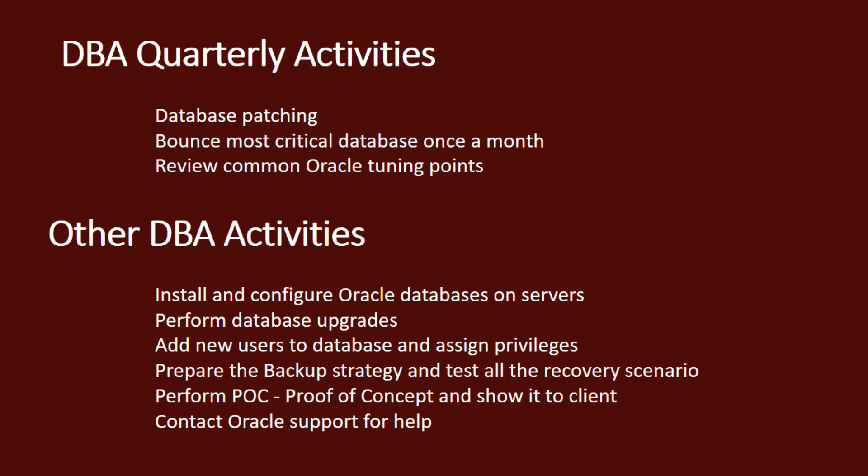Quarterly DBA activities include database patching if there are any upgrades. Upgrades are not very common every quarter, but database patching definitely happens quarterly. Bouncing critical databases — though whether this is monthly or quarterly is not mandatory; there are databases that have been running for years. Another quarterly activity is reviewing common Oracle tuning points — improving performance, looking at database tuning options, tweaking the application, and further trying to improve it.